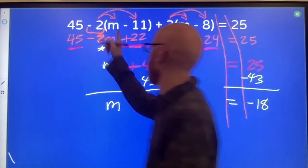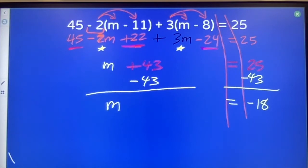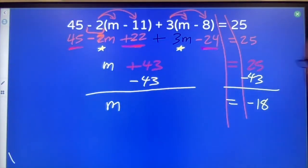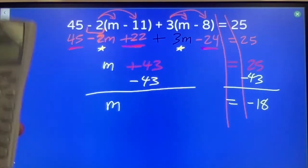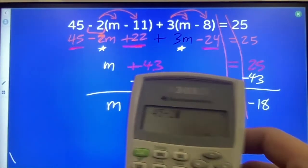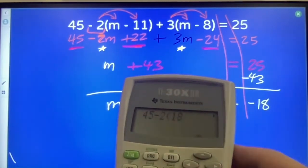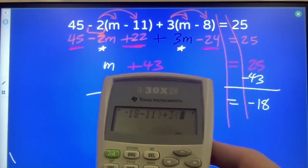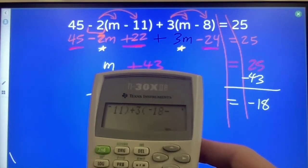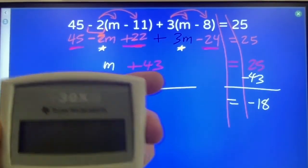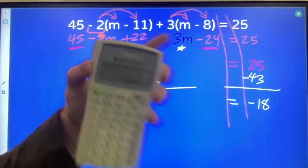If I want to double check my work, I can put that negative 18 in here and here. And let's see if it makes the equation true. Starts looking like this: 45 minus 2 times negative 18 minus 11 plus 3 times negative 18 minus 8 equals 25. Solid. Know that I'm correct.